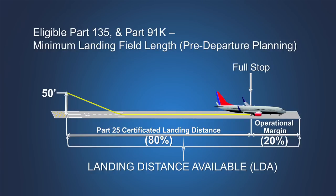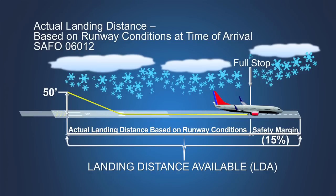For eligible on-demand and fractional operators that meet certain qualifications, including the use of an approved destination airport analysis, this requirement is adjusted such that the landing distance demonstrated during certification must remain within 80% of the landing distance available. FAA guidance recommends that as close as practical to the time of arrival, flight crews perform an assessment of the actual landing distance required based on the reported weather and runway conditions, and include an additional 15% safety margin. The minimum runway required resulting from this assessment must be less than the landing distance available.